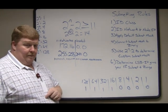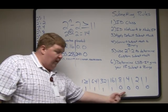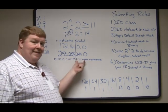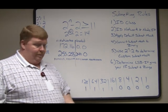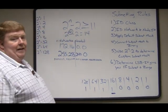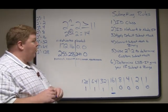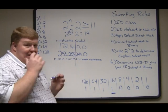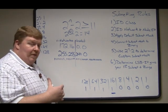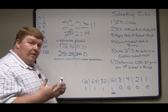Step six: determine the least significant bit. The least significant bit is the bit in this octet that still has value — specifically the smallest bit in this octet that still has value. If you look, the smallest bit we have is 16. So our least significant bit is 16.